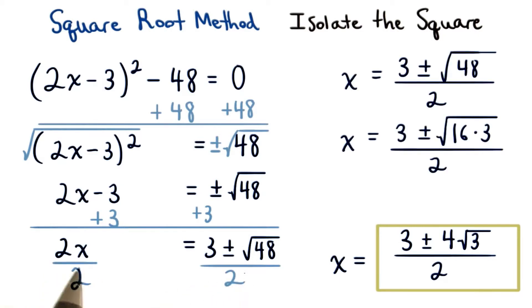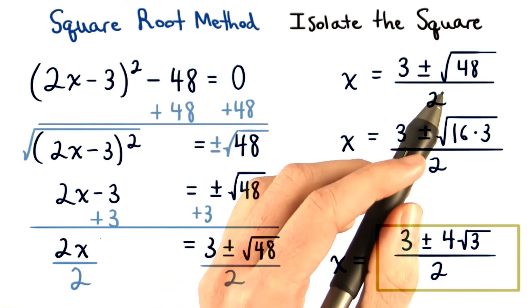When we divide both sides by 2, we're left with 1x on the left, and 3 plus or minus root 48 divided by 2 on the right.